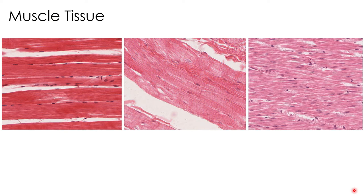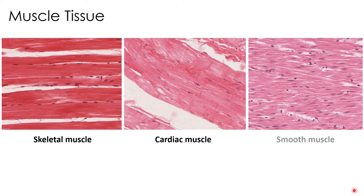There are three histological types of muscle in the body: skeletal muscle, cardiac muscle, and smooth muscle. Although the process of contraction is somewhat similar in all three, they vary in terms of their location, appearance, and their means of nervous system control. Take a look at these three pictures and think about what similarities and differences you see between these three different types.